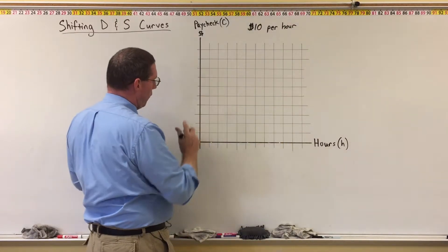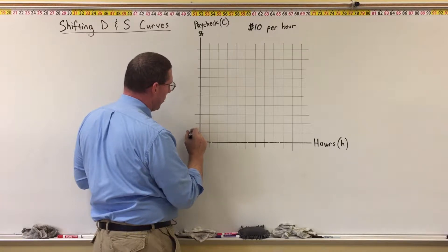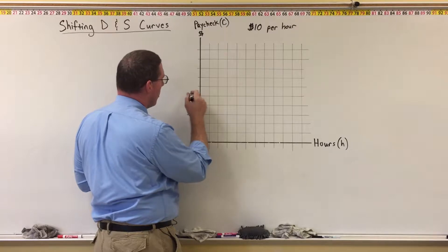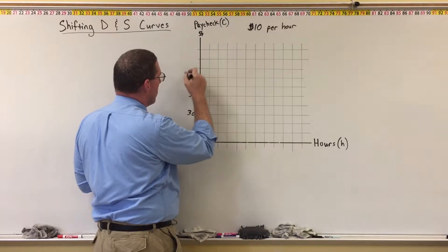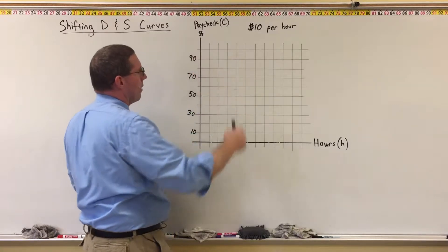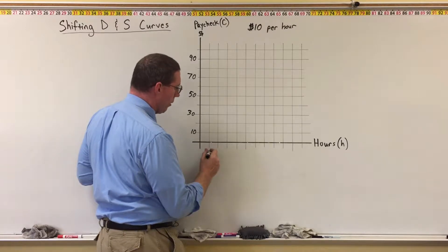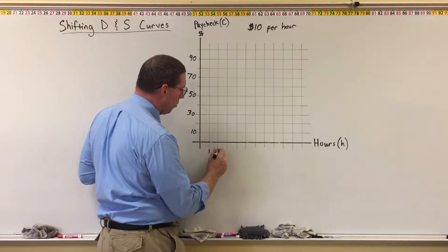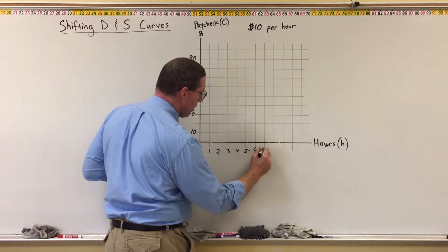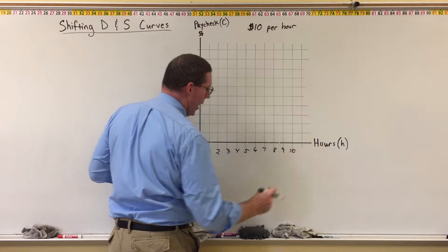On the vertical axis, the total paycheck scale goes up by $10 increments: $10, $20, $30, $40, $50, $60, $70, $80, $90, and $100 at the top. On the horizontal axis, we count hours one at a time: one hour, two, three, four, five, six, seven, eight, nine, ten hours.